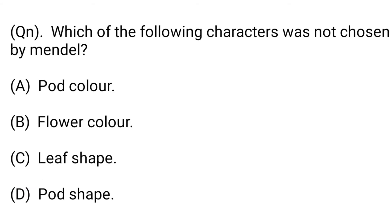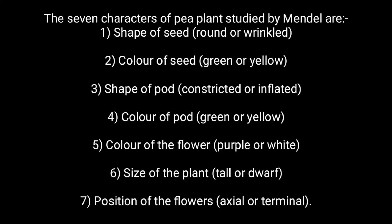Next question: Which of the following characters was not chosen by Mendel? Option A: pod color. Option B: flower color. Option C: leaf shape. Option D: pod shape. The seven characters of pea plants studied by Mendel are: shape of seed (round or wrinkled), color of seed (green or yellow)...